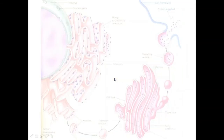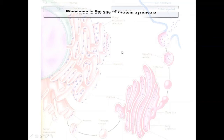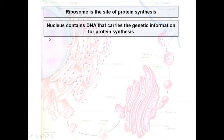Ribosome is the site of protein synthesis. In our cell, to synthesize a protein, we rely on the genetic information that is carried by DNA in the nucleus. The genetic information on DNA is then copied out to make an RNA. This RNA molecule is known as messenger RNA.